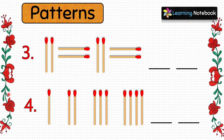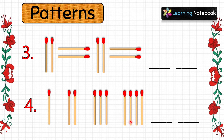Here we can see there is no change in the position of the matchsticks, but there is a change in the number. First we have one matchstick, then two, then three, then four — so the number of matchsticks is being increased by one every time. So in the first blank we are going to paste five matchsticks, and in the second blank we will paste six matchsticks.